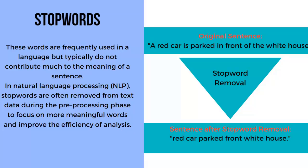The next topic is stop word removal. Stop words are the most frequently used words in a language, such as articles, prepositions, conjunctions, etc. These words don't contribute much meaningful information to the text. Examples of English stop words are: the, a, and, so, what, etc. Stop words are removed to eliminate low-level information, allowing more focus on important context. Removal of stop words reduces the dataset size and thus reduces training time due to fewer tokens.